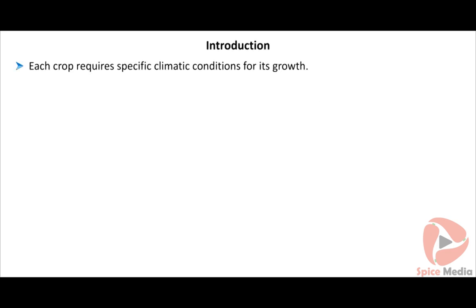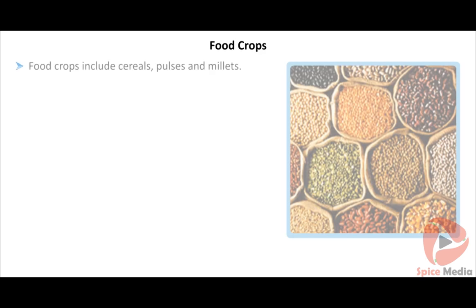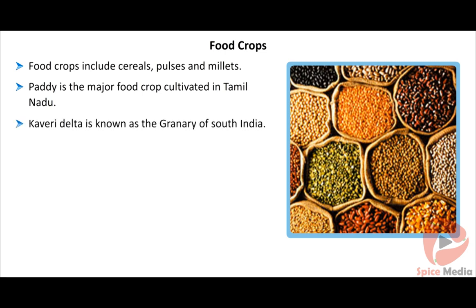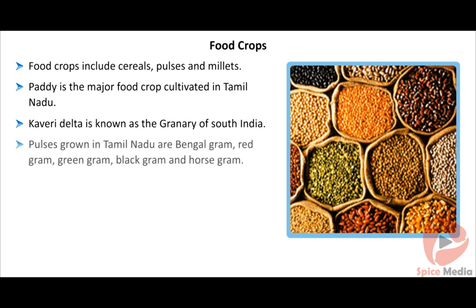Each crop requires specific climatic conditions for its growth. All tropical crops are grown in Tamil Nadu. Food crops include cereals, pulses, and millets. Paddy is the major food crop cultivated in Tamil Nadu. The Kaveri Delta is known as the granary of South India, and paddy is raised in four seasons there.